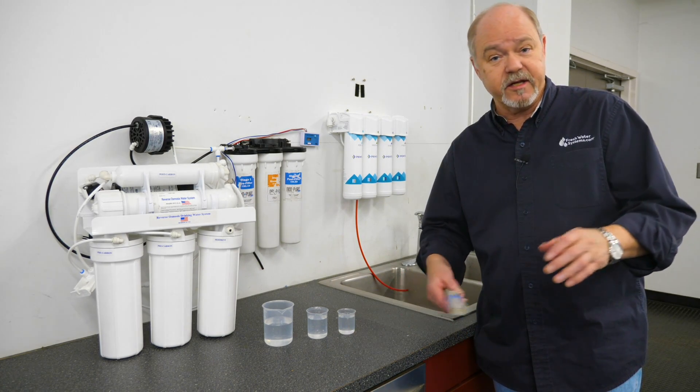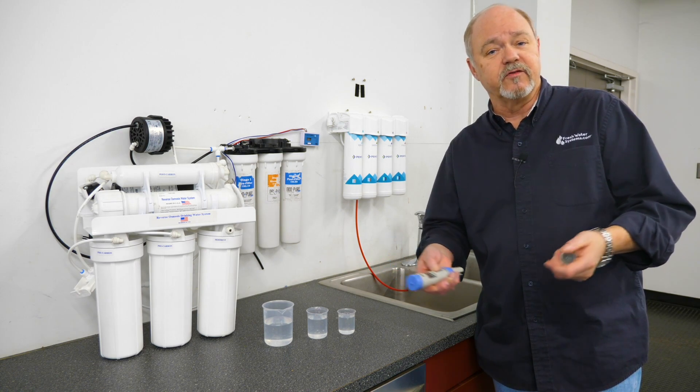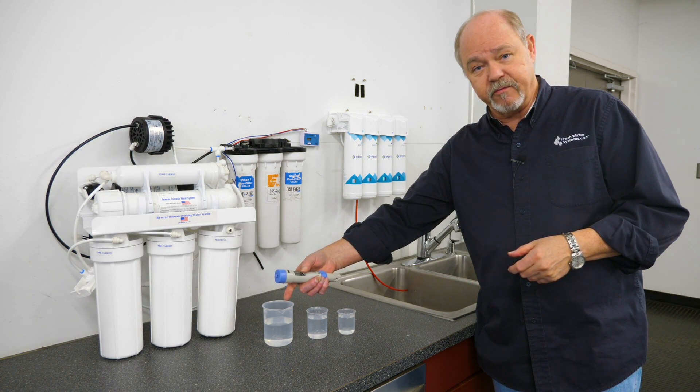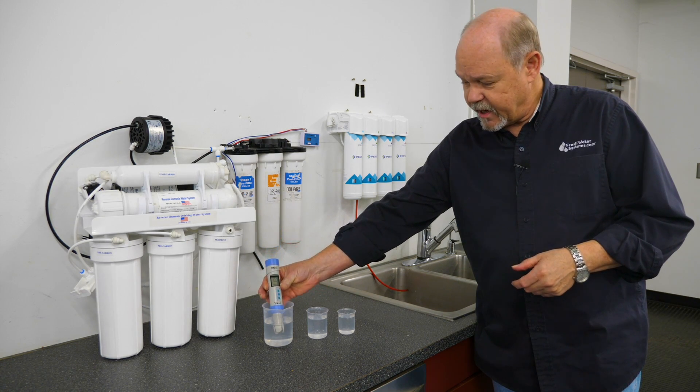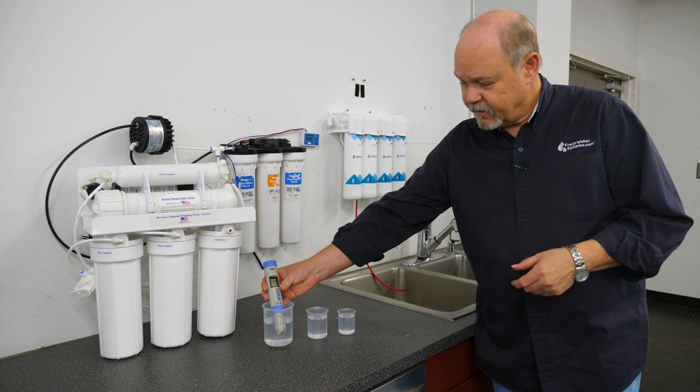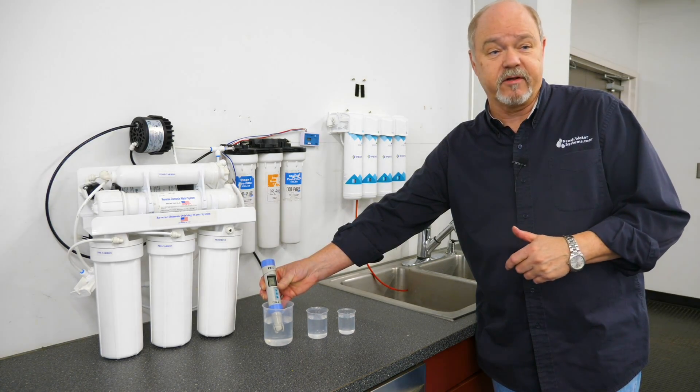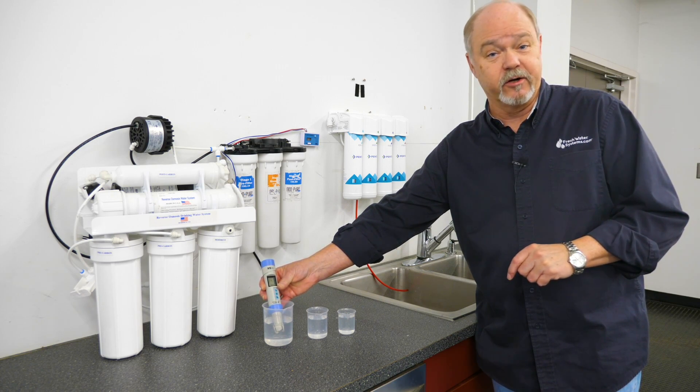So we take the TDS meter and we literally just put it in the water after we turn it on and it gives us the levels. So in this little piece here I have tap water and our tap water is registering at 34.8. Now we're in Greenville South Carolina and we're pretty blessed to have very low mineral content in our tap water.